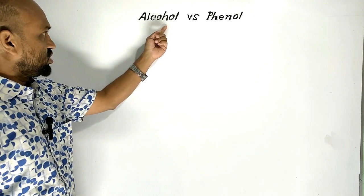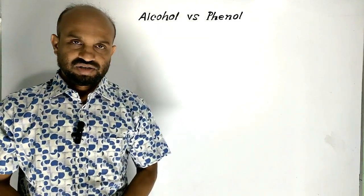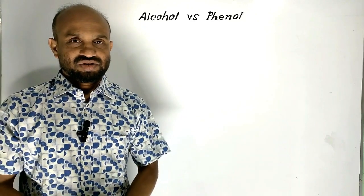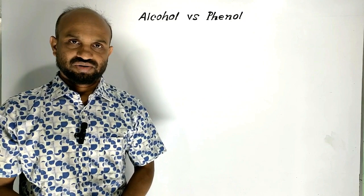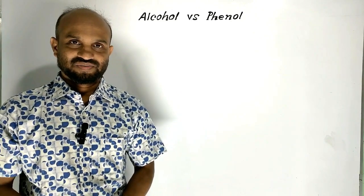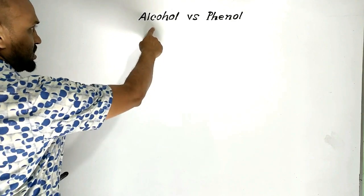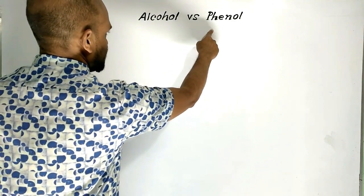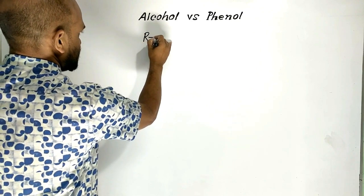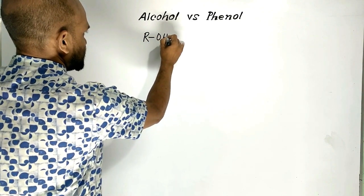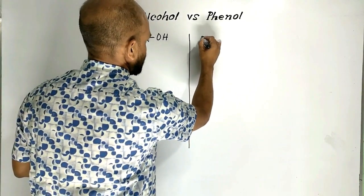Alcohol versus phenol — this is today's lesson. In this lesson we are going to learn some differences between alcohol and phenol. The general formula of alcohol contains an OH group, and phenol is hydroxybenzene.